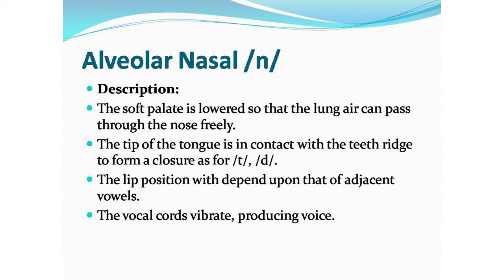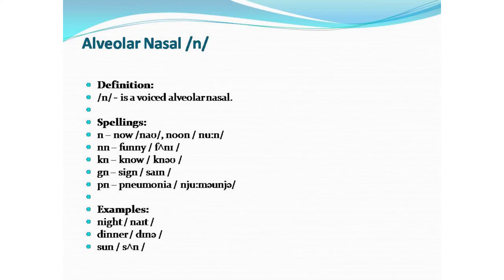The second nasal sound is /n/ — alveolar nasal. The soft palate is lowered so that the lung air can pass through the nose freely. The tip of the tongue is in contact with the teeth ridge to form closure, as for /t/ and /d/. The lip position depends upon the adjacent vowels. The vocal cords vibrate producing voice. /n/ is a voiced alveolar nasal. Spellings: N in now, double N in funny, KN in know, GN in sign, PN in pneumonia.